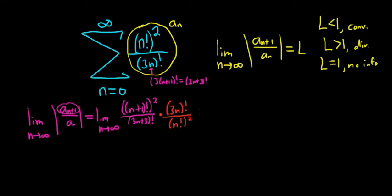This is equal to the limit as n approaches infinity. If you have n plus 1 factorial, you can write that as n plus 1, and then the next term would be n, n minus 1, n minus 2, and so on. So it's really n plus 1 times n factorial.